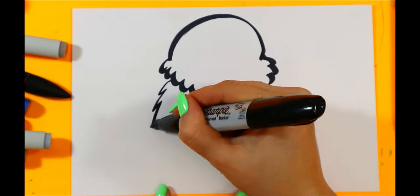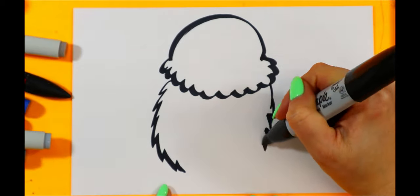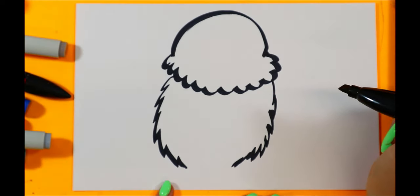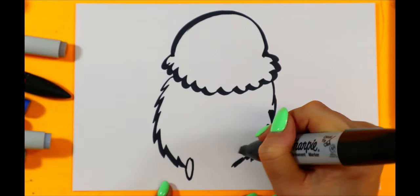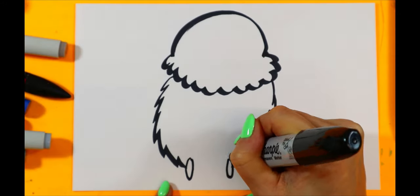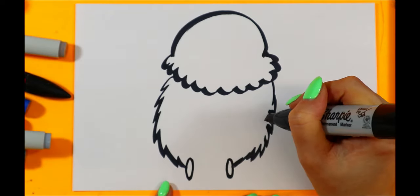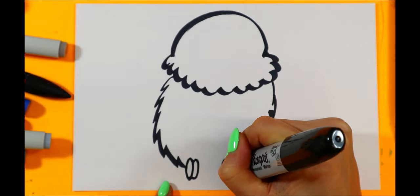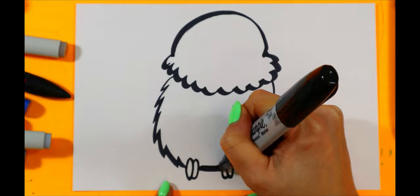Then we're going to add some curving lines around the bottom, and then we're going to add some zigzag lines down each side. At the bottom, we're going to draw an oval on each side and then another to make little toes. And then we just got to connect underneath.